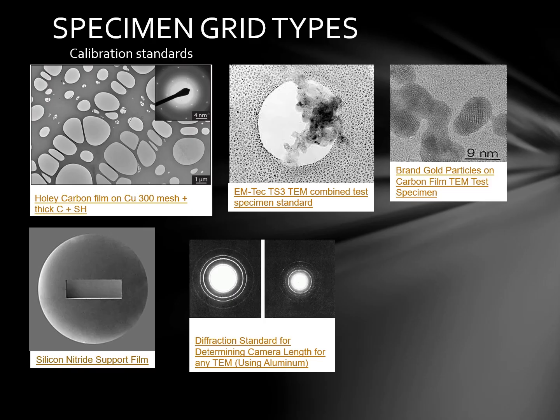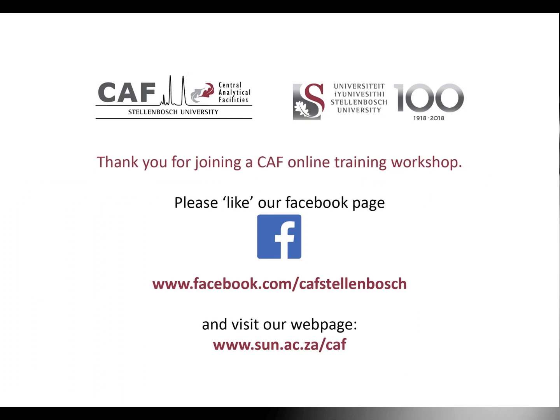Calibration standards include various types like lattice plane specimens and perforated carbon forms that help check the microscope resolution, astigmatism, and microscope stability. There are many types of calibration standards for STEM, especially for STEM magnification, diffraction, and x-ray analysis. Thank you for listening, and any questions are welcome.